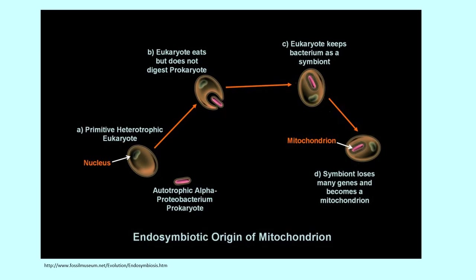The eukaryotic cell was able to engulf prokaryotes, and thus the endosymbiosis of mitochondria came when a eukaryote engulfed but did not digest an autotrophic bacterium. This bacterium is thought to be alpha proteobacteria, a bacterium that creates energy through photosynthesis. The eukaryote then began a symbiotic relationship with the bacterium where the eukaryote provided protection and nutrients, but the prokaryote provided additional energy through its respiratory cellular machinery.